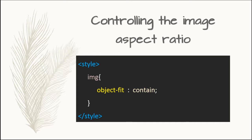The object-fit property specifies how the contents of a replaced element should be fitted to the box generated by its height and width. A replaced element is an element whose content is defined by an external resource, such as an image.